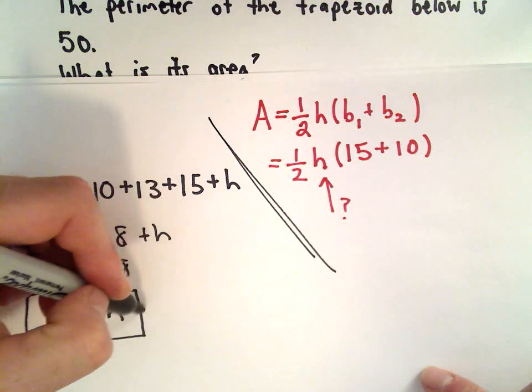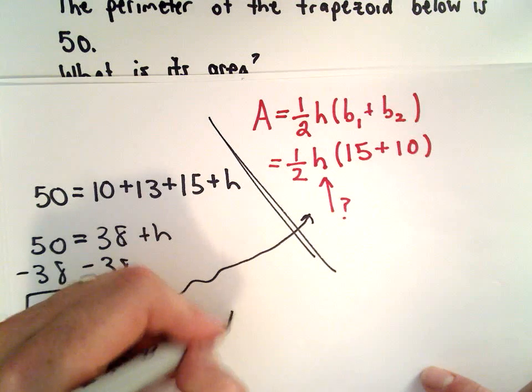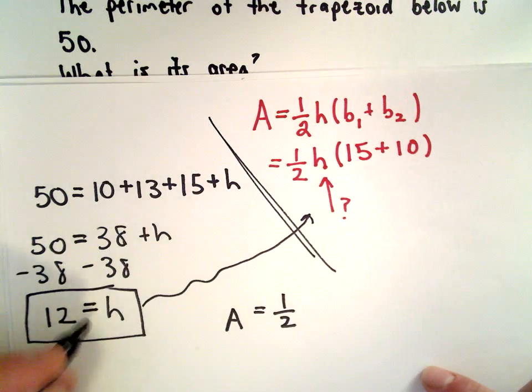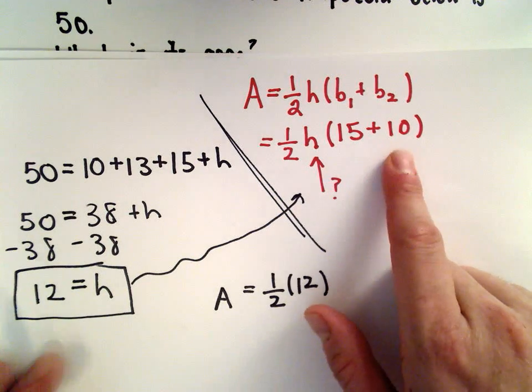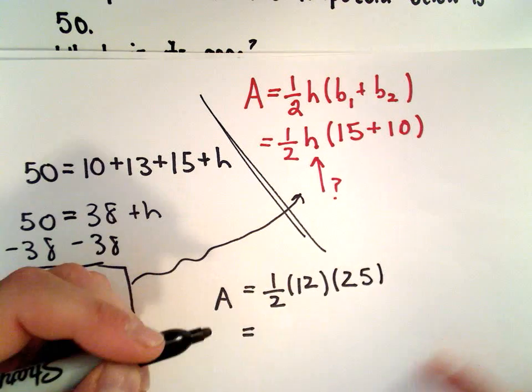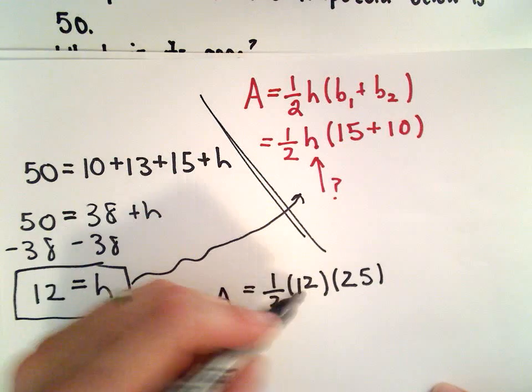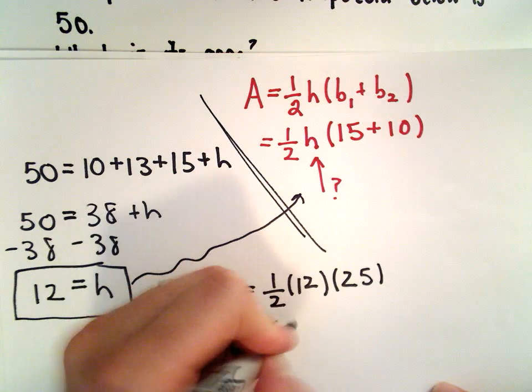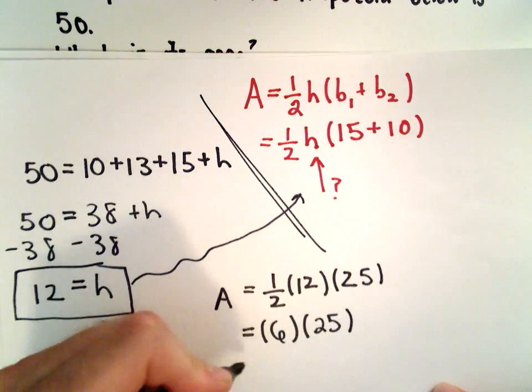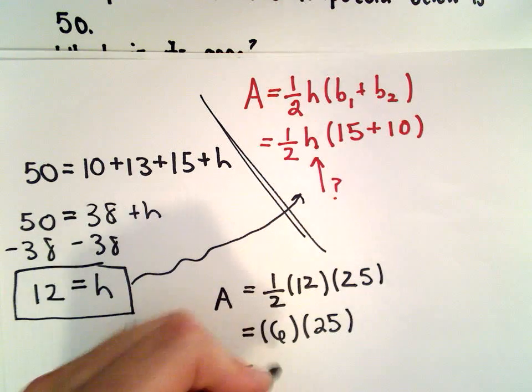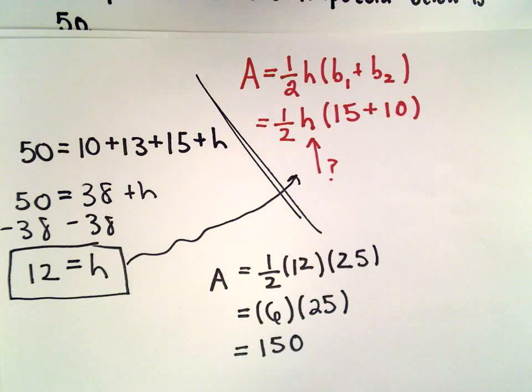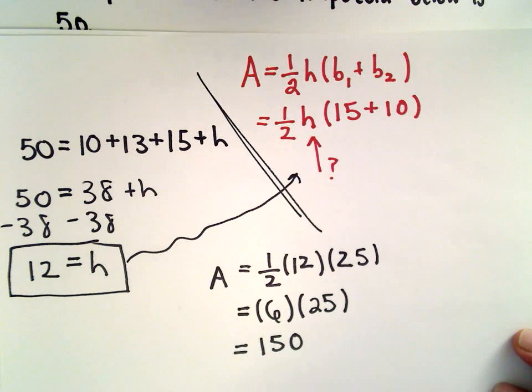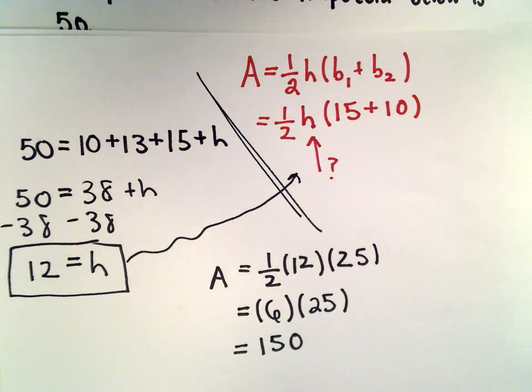Now I'm simply going to substitute that value back over here. The area is going to be 1 half of the height, which we just said was 12. We can simplify inside the parentheses. 15 plus 10, that's going to be 25. 1 half multiplied by 12, well, 1 half of 12 is going to be 6. 6 multiplied by 25, if I've got 6 quarters in my pocket, I've got $1.50. That's how I always multiply by 25. So the area of our trapezoid is going to be 150 square units.